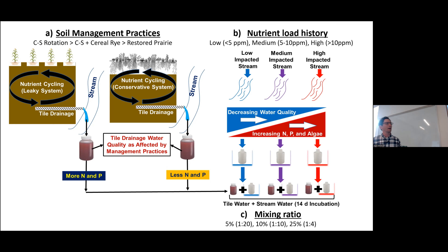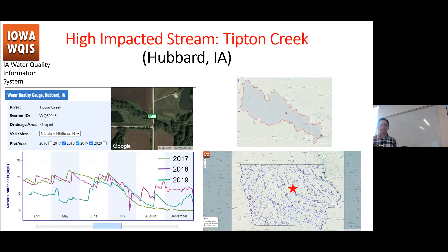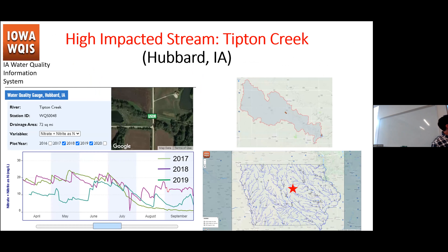We were interested in whether the prior history of nutrients — the legacy effect — matters: whether a stream is pristine with low nutrient load over a long period of time, or what we call a high-impacted stream with higher nutrient concentrations and loads.